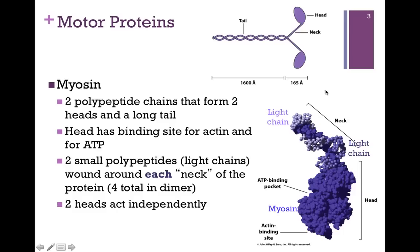Let's look at that head region a little bit more, pictured in space-filling model on the lower right. The head and neck region are in dark purple. We find that the head has two binding areas. The top of the head is the actin binding site — that's its target protein. It also has a binding pocket for ATP. So here's another example of an ATP binding protein, and as we'll see it uses ATP to hydrolyze and release energy, which will help with its conformational changes and mechanism.